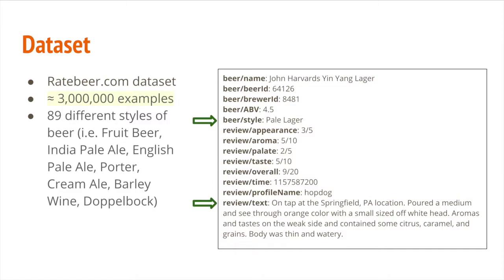To give a bit of an overview of our dataset, it came from ratebeer.com and contained around 3 million different reviews for different beers. Within these reviews were 89 different styles of beer, such as fruit beers, IPAs, English pale ales, etc. On the right-hand side you can see an example of a single review. Of these fields, only two were utilized by us: the beer style and the text of the review, although other fields were available such as a variety of different ratings, the specific beer name, and alcohol concentration. When splitting this dataset into train, dev, and test, we used a 90-5-5 split.